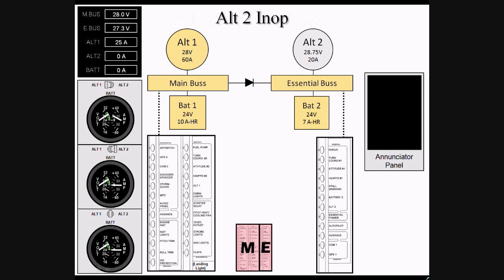In contrast, an Alt-2 failure is much less critical. Alt-1 is capable of powering all items in the aircraft. Main bus voltage will remain unchanged, while essential bus voltage will drop to approximately 7 tenths of a volt less than that of the main bus due to the loss of voltage as current flows across the diode.